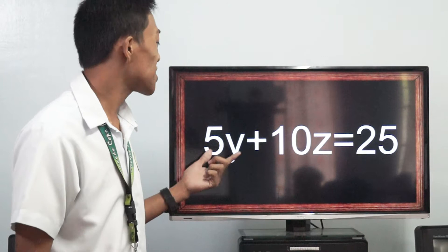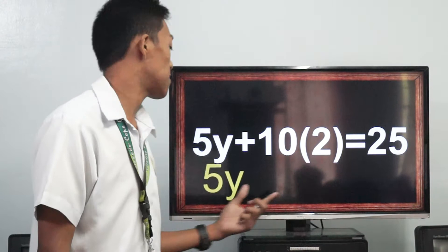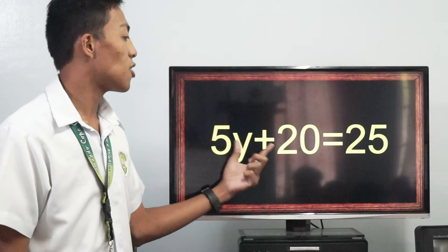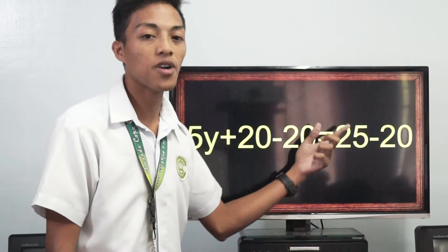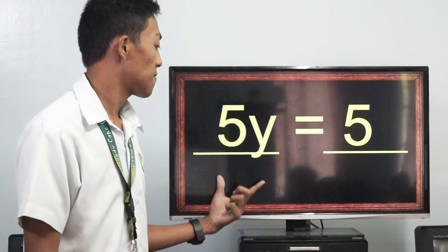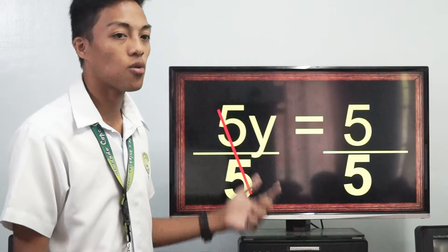Third, substitute the value of z into the fourth equation: 5y plus 10z equals 25. So 5y plus 10 times 2 equals 25, giving us 5y plus 20 equals 25. Let's subtract 20 from both sides using the subtraction property of equality: 5y equals 5. Let's divide both sides by 5 using the division property of equality. 5 over 5 equals 1, so we have the value of y equals 1. The value of z equals 2 and the value of y equals 1.